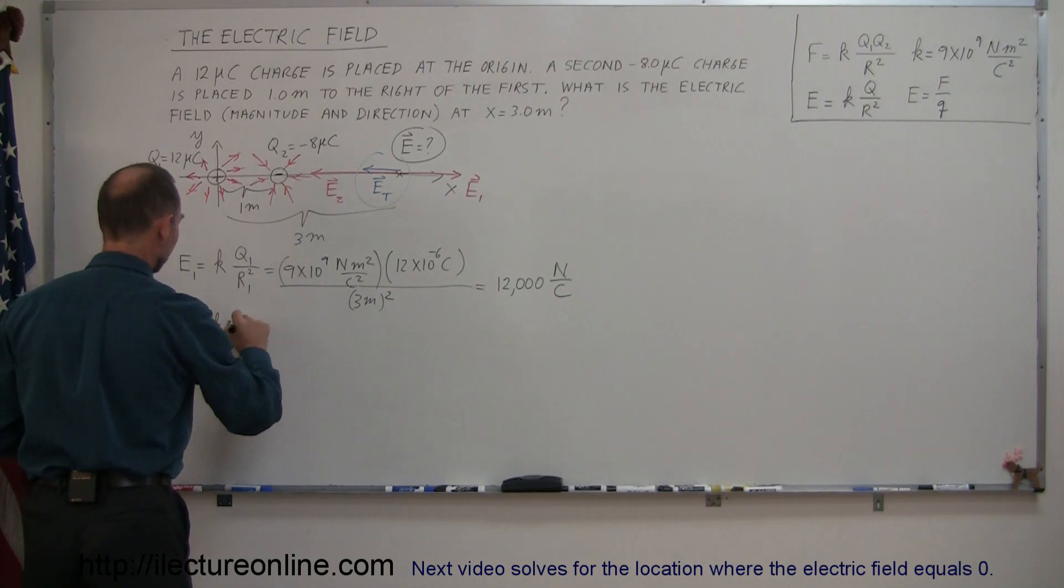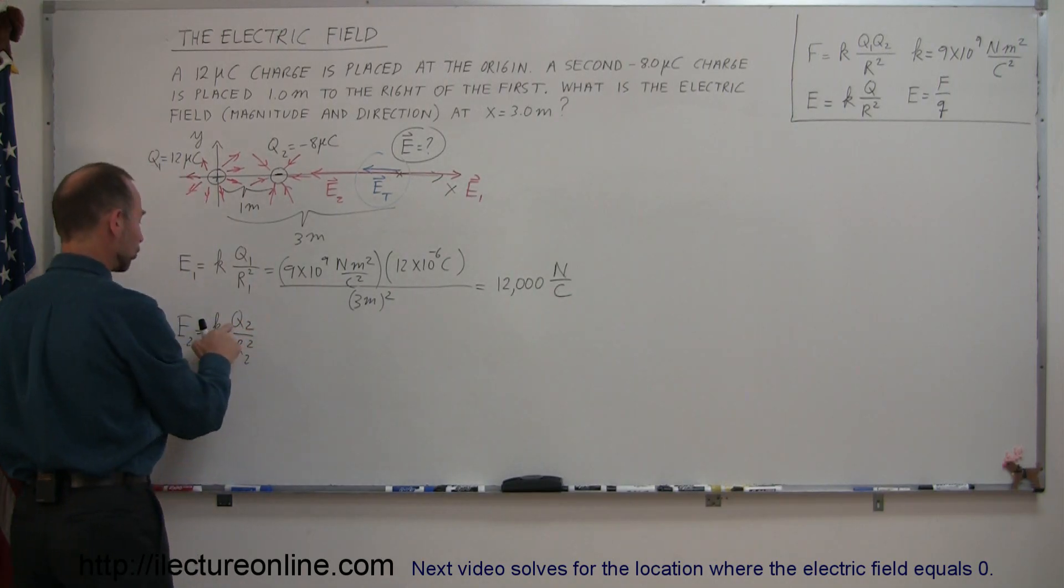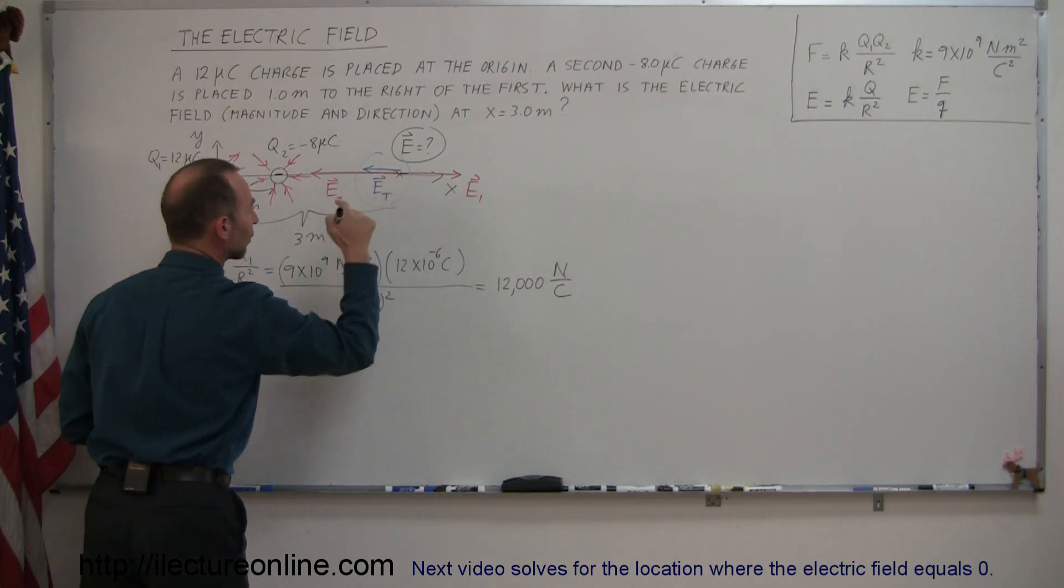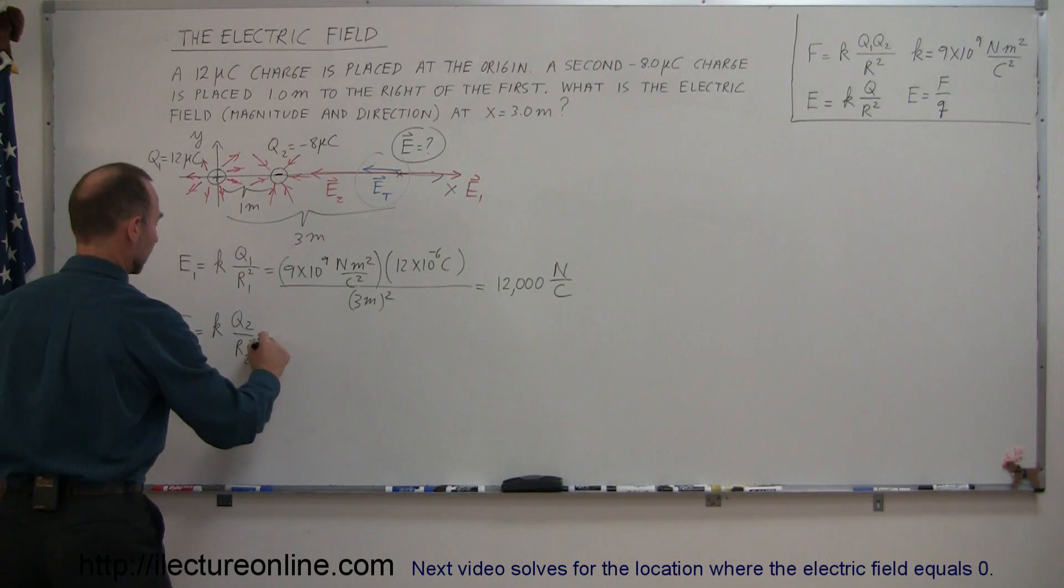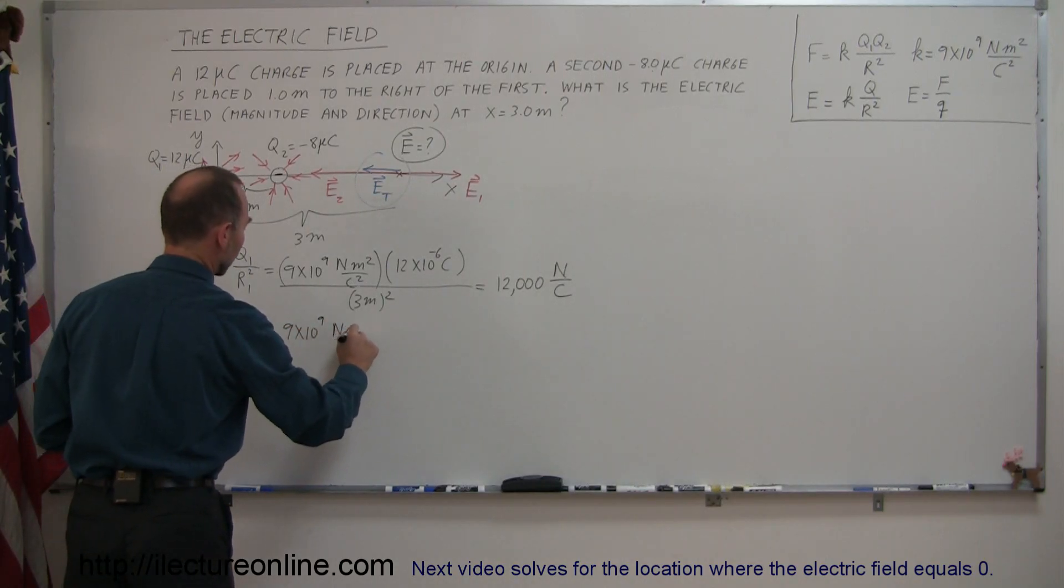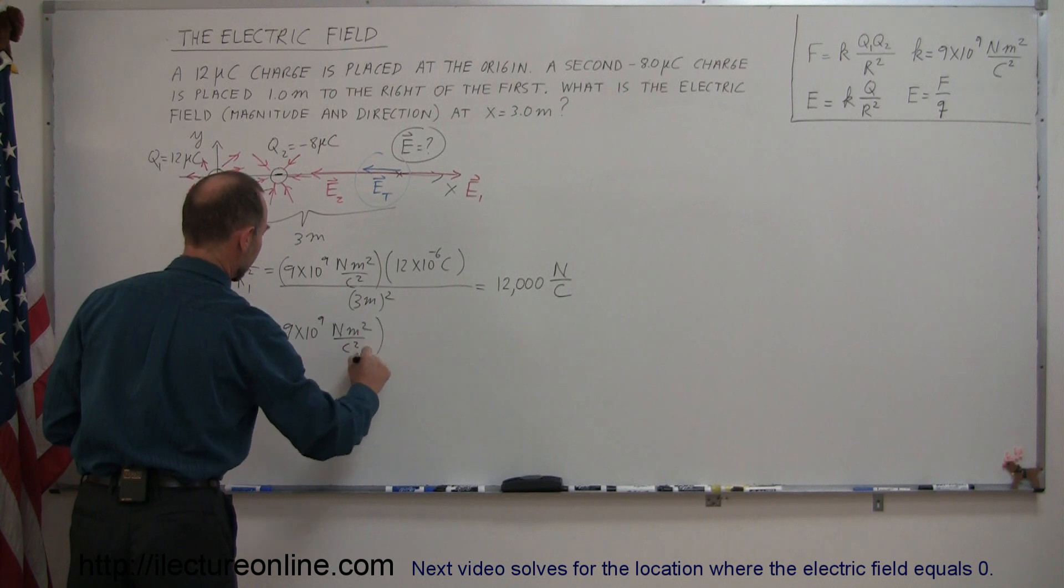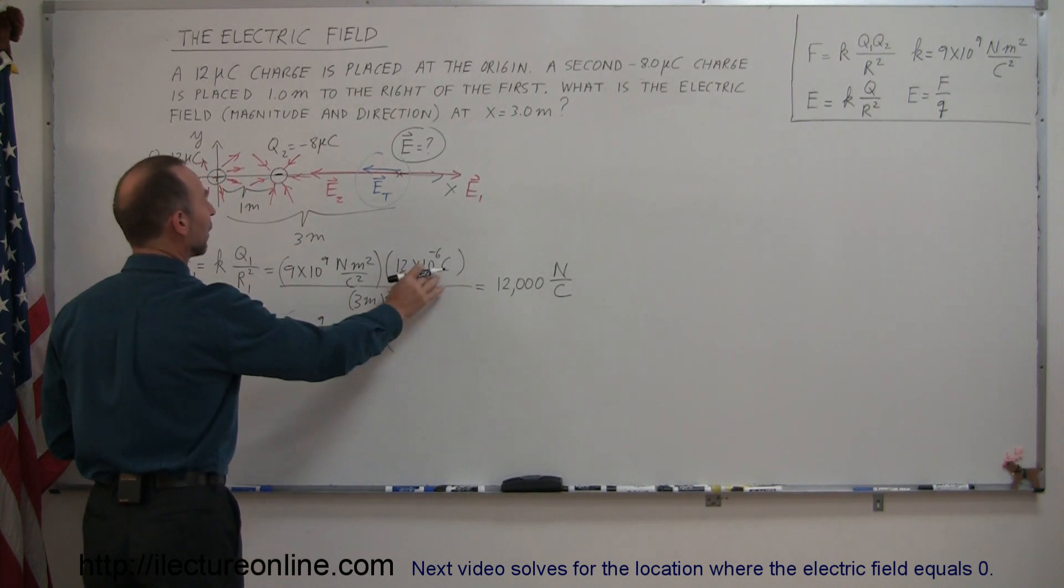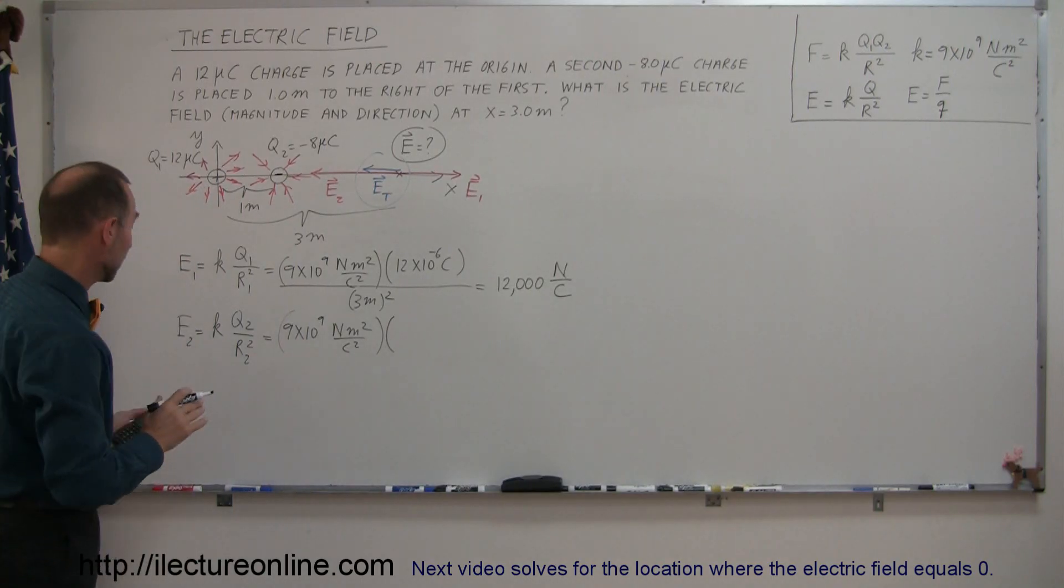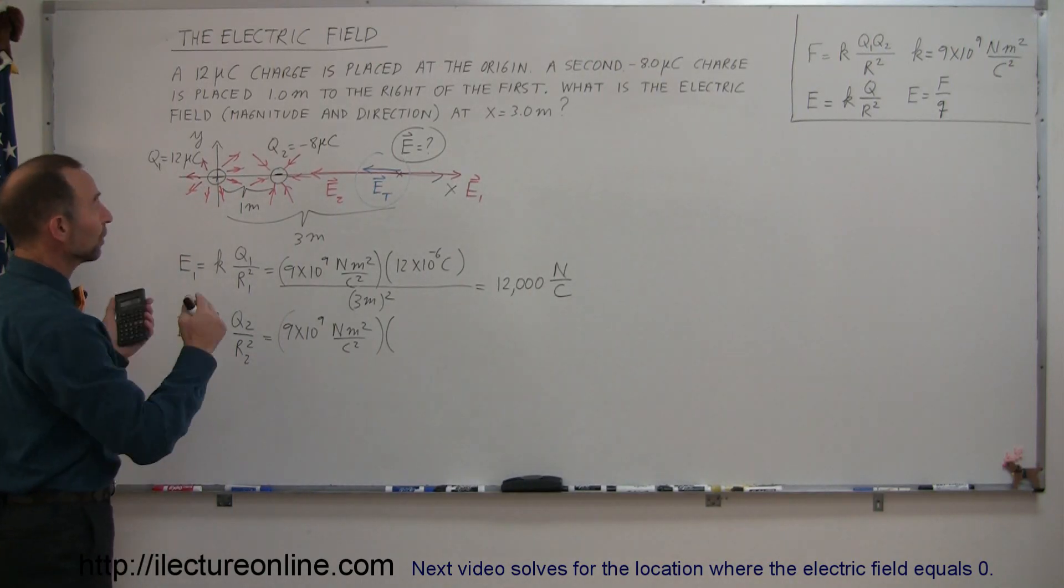It's equal to K times Q2 over R2 squared. That would be the charge Q2 and the distance from Q2 to the location we're interested in. So that's equal to 9 times 10 to the 9th newtons meters squared per coulomb squared times... Now we have 8 microcoulombs. Actually minus 8 microcoulombs, but since I'm looking for the magnitude, we don't have to worry about the sign.